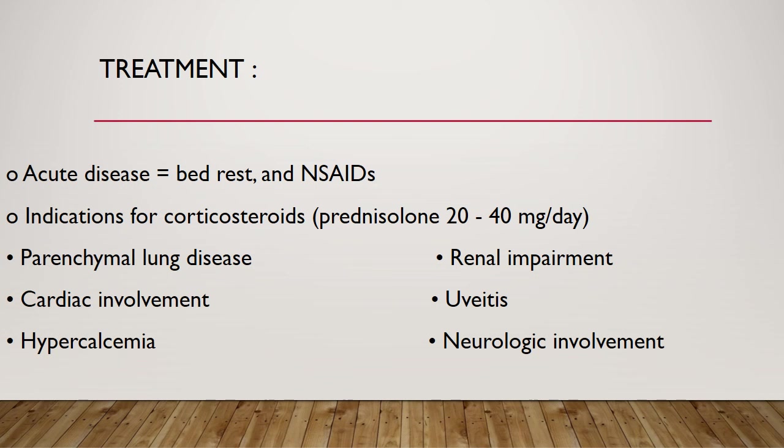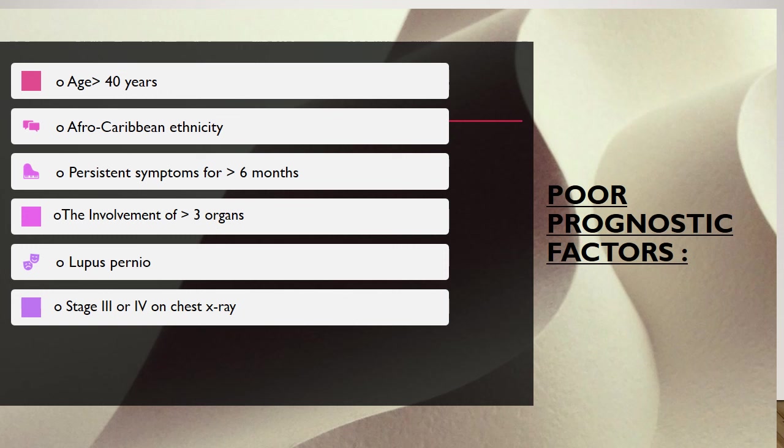Treatment in acute disease includes bed rest and NSAIDs. Indications for corticosteroids — such as prednisolone — include parenchymal lung disease, uveitis, hypercalcemia, neurological involvement, renal impairment, or cardiac involvement. In these cases, corticosteroids will be initiated.